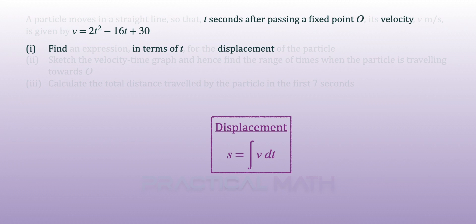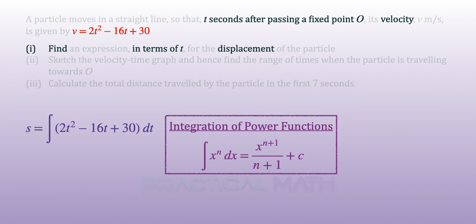To find displacement from velocity, you will have to integrate the velocity equation. For this question, we will integrate 2t² minus 16t plus 30. Let's take a look at the integration of power functions where we integrate x^n with respect to x. We'll give the result of x^(n+1) divided by n+1. Power plus 1 over power plus 1.